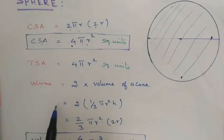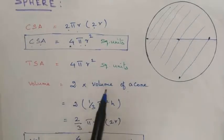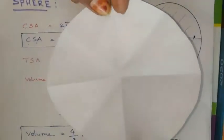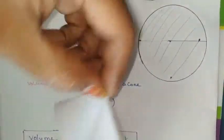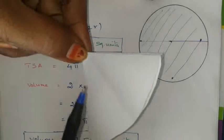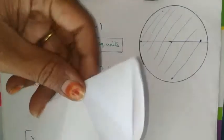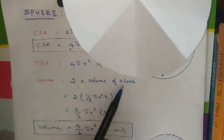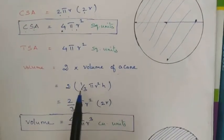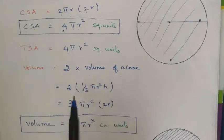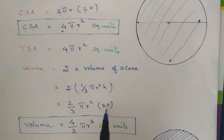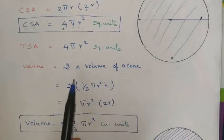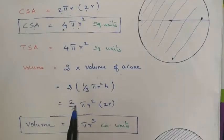The volume of a sphere is derived using 2 times the volume of a cone. Volume = 2 × (1/3)πr²h. Since h = 2r for the sphere, this gives (2/3)πr² × 2r = (4/3)πr³. So the volume of a sphere is (4/3)πr³.